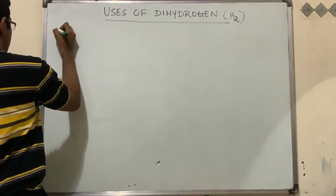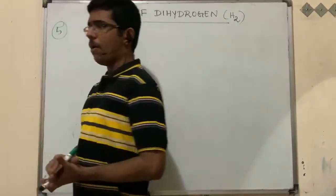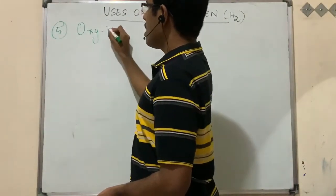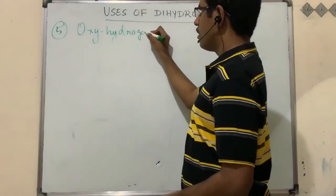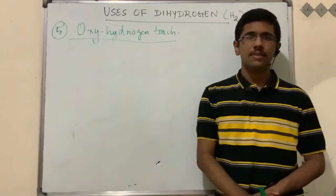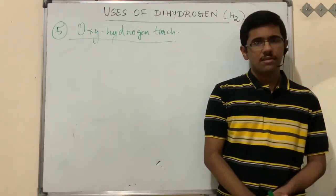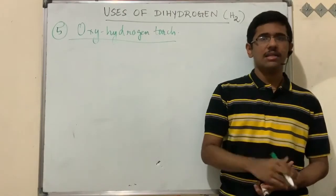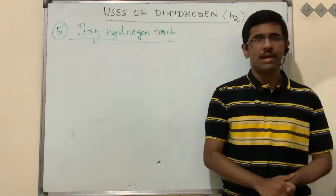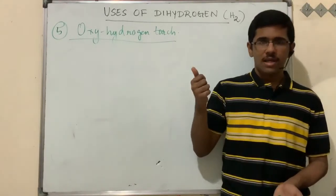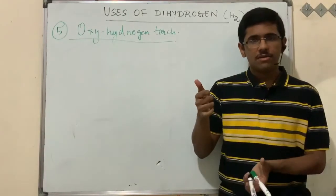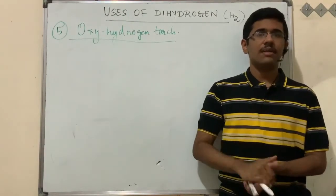Another very important use is the oxy-hydrogen torch. In this process, hydrogen can be broken down into individual H atoms. In welding, you have seen the welding process where a particular torch is used to shoot flames onto a metal target so that it can be melted.